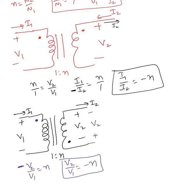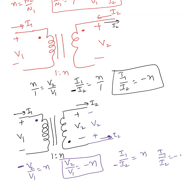When it comes to i2, the current is supposed to go out of the positive terminal — not the given one, but the new v2 defined by the dot convention. It's supposed to go out of the positive terminal of v2, but i2 is coming into the positive terminal. So we put i2 as negative: i1 over negative i2 equals n, therefore i1 over i2 equals negative n.